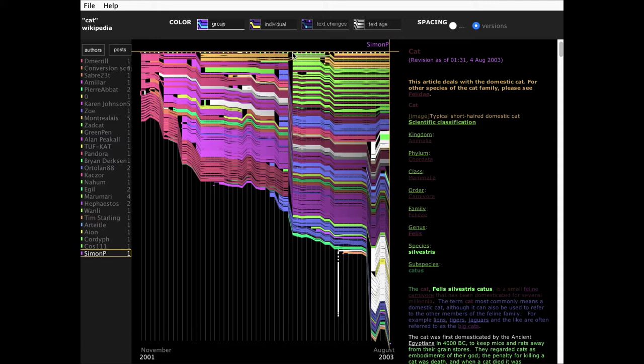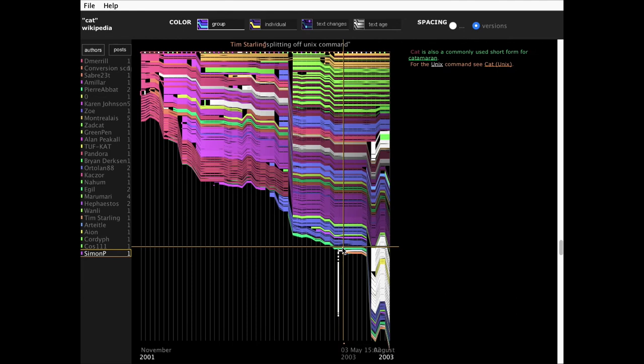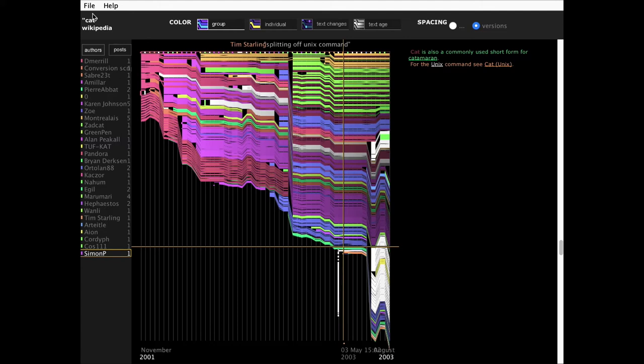There are also some interesting patterns here. You can see the stripy green and brown pattern. Well, what this is, if you look on the right, it's a table that someone added with the kingdom, and the class, and the family, and the species for cats. I can also see this antenna at the bottom. And what that is, someone added a bunch of paragraphs talking about the UNIX command CAT. And then on the next version, someone else redirected that piece of text to a new page called CAT UNIX.